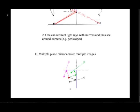You can redirect light rays with mirrors to see around corners—applications include periscopes and driveway mirrors. Multiple plane mirrors can also create multiple images. For example, with two perpendicular mirrors, rays bouncing off a horizontal mirror create one image, rays bouncing off both mirrors create another, and rays from a vertical mirror create a third, producing the kaleidoscope effects you may have seen with mirrors arranged at various angles.